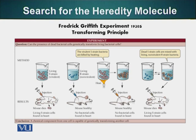The smooth S bacteria, when living, make a capsule. This capsule is made up of a shiny proteoglycan molecule, and it allows the bacteria to evade the host — in this case, the mouse's immune system.